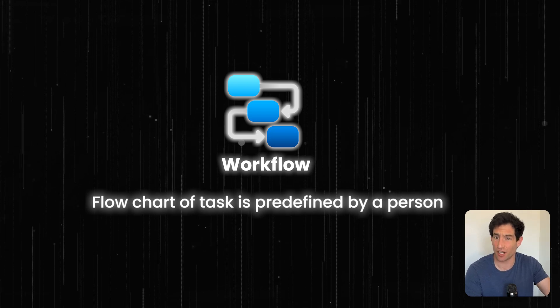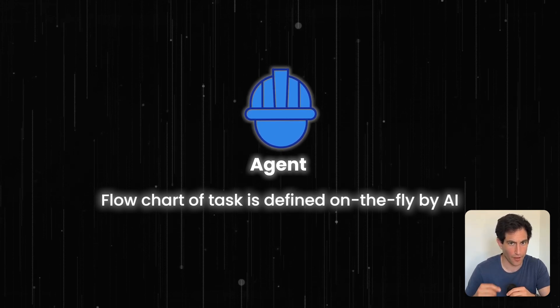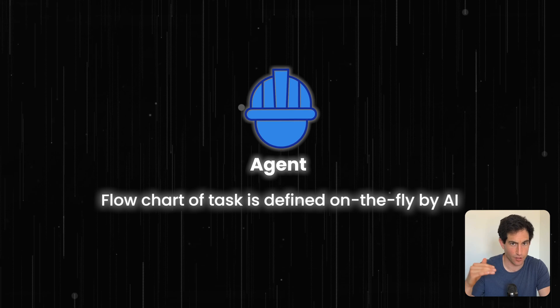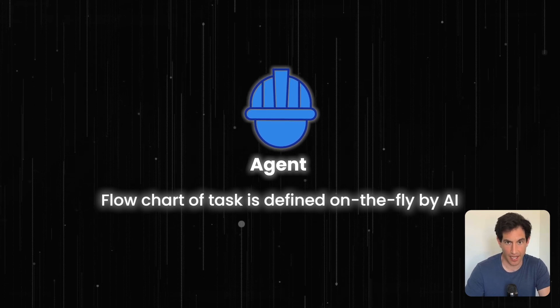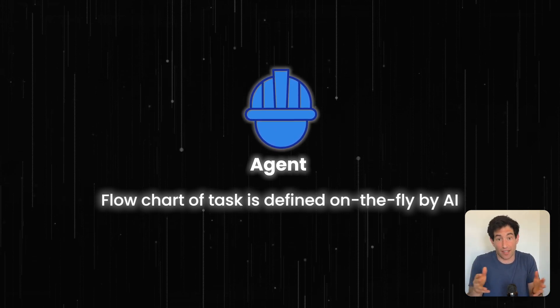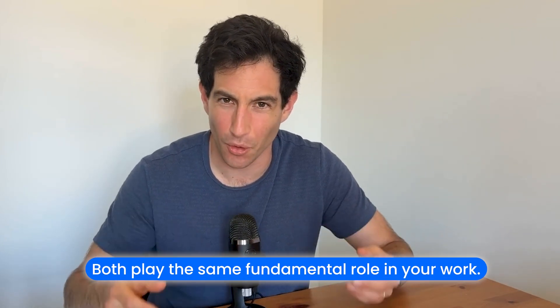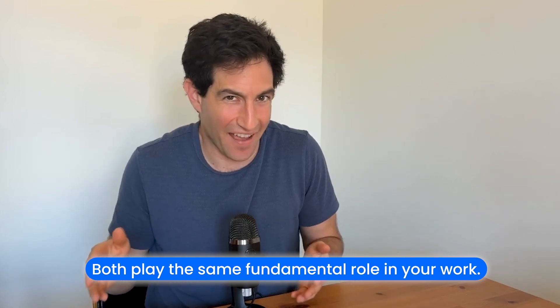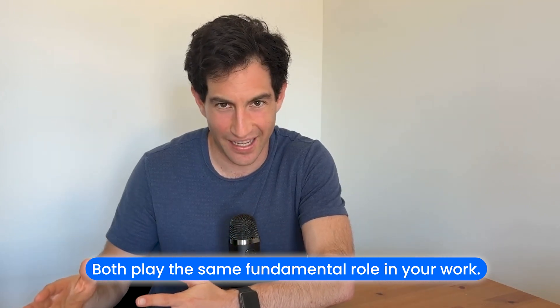Those steps are laid out in advance in the flowchart by the person, even though there may be AI logic or reasoning involved in the individual steps. An agent, on the other hand, constructs its own flowchart on the fly based on its goal and a set of tools it has. So you'd give the agent a goal — you need to automatically respond to spam emails — and its tools are the ability to classify things as spam or not spam, and to receive and reply to emails. The agent then figures out on the fly, based on a new email coming in, what set of steps to take to achieve that goal. Whether it's technically an agent or technically a workflow, they both play the same role in your day-to-day work — doing work on your behalf behind the scenes. Whether you've pre-specified the flowchart or the agent decides it on the fly is just sort of a detail.